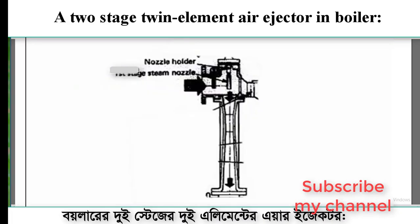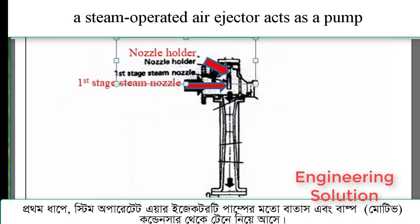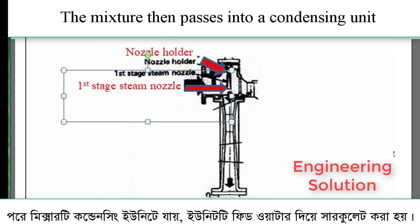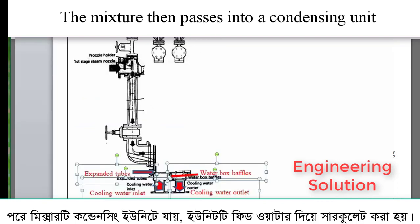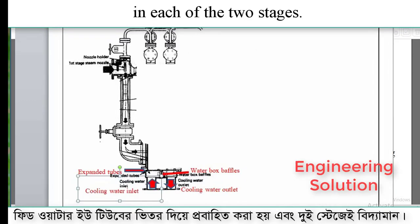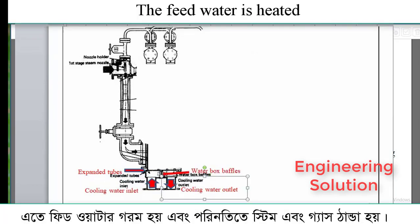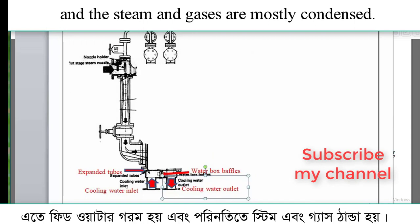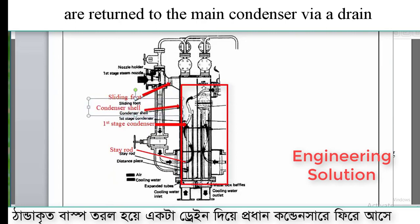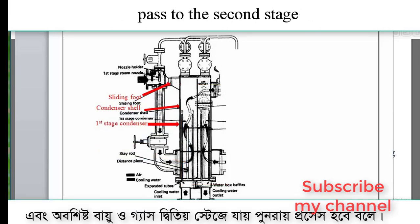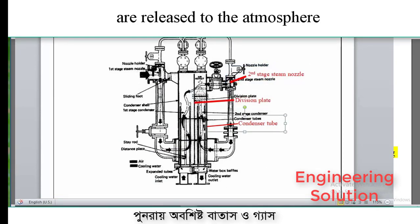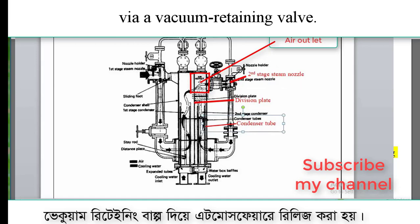A two-stage twin element air ejector in a boiler: in the first stage, a steam-operated air ejector acts as a pump to draw the air and vapors from the condenser. The mixture then passes into a condensing unit which is circulated by feed water through U-tubes in each of the two stages. The feed water is heated and the steam and gases are mostly condensed. The condensed vapors and steam are returned to the main condenser via a drain, and the remaining air and gases pass to the second stage where the process is repeated. Any remaining air and gases are released to the atmosphere via a vacuum retaining valve.